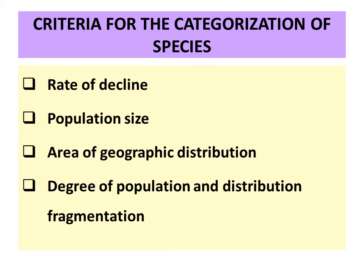According to IUCN, species are characterized into 9 categories on the basis of rate of decline, population size, area of geographical distribution, and degree of population and distribution fragmentation.